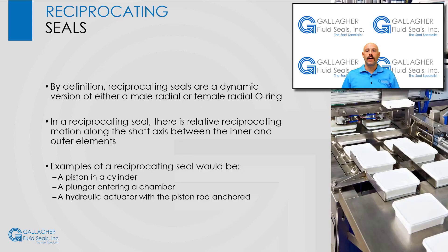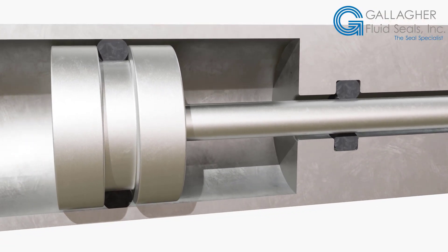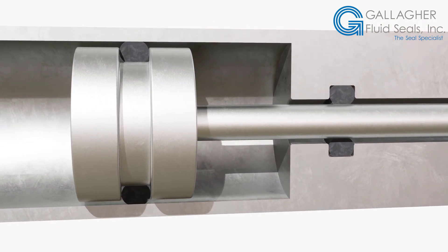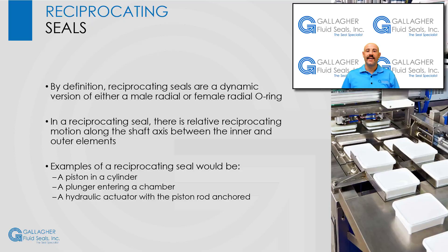In a reciprocating seal, there is relative reciprocating motion along the shaft axis between the inner and outer elements. This motion tends to slide the O-ring or sealing surface at the O-ring back and forth with the reciprocal motion. Examples of a reciprocating seal would be a piston in a cylinder, a plunger entering a chamber or housing, and finally, a hydraulic actuator with the piston rod anchored.